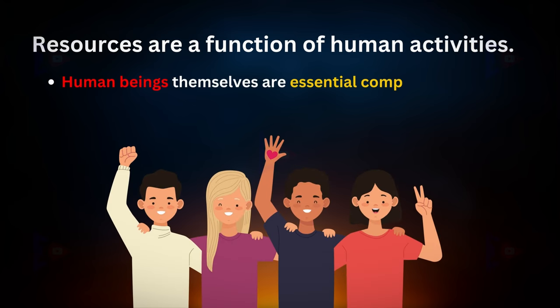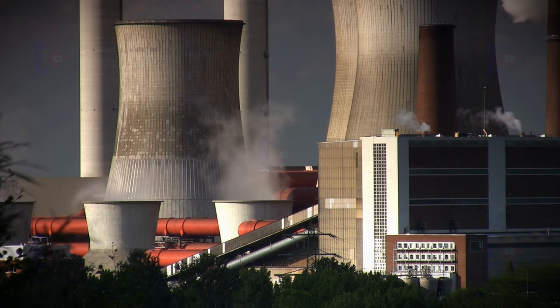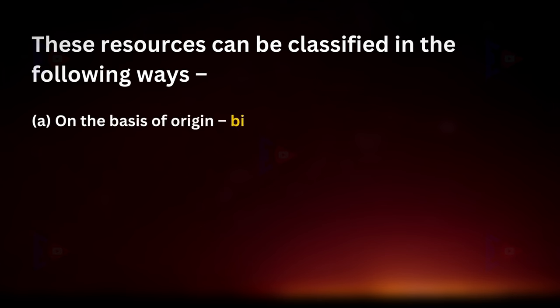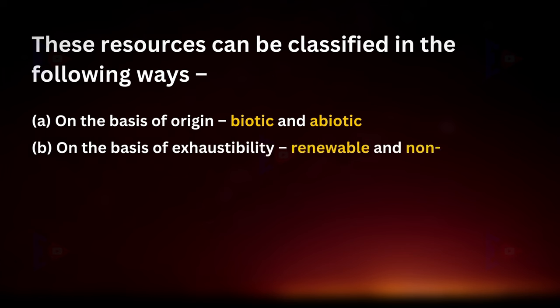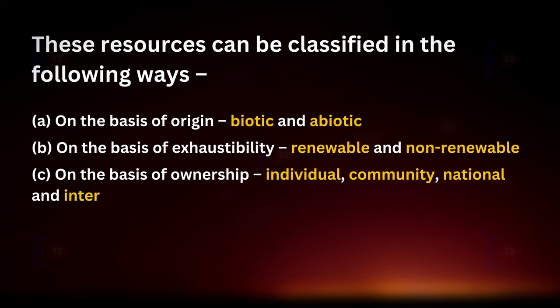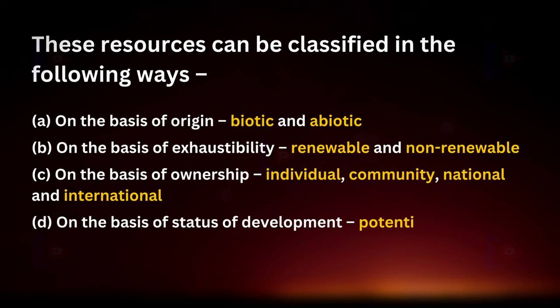Human beings themselves are essential components of resources. They transform material available in our environment into resources and use them. Resources can be classified on the basis of origin (biotic and abiotic), exhaustibility (renewable and non-renewable), ownership (individual, community, national and international), and status of development (potential, developed, stock and reserves).